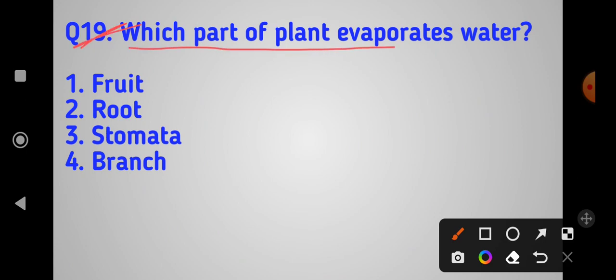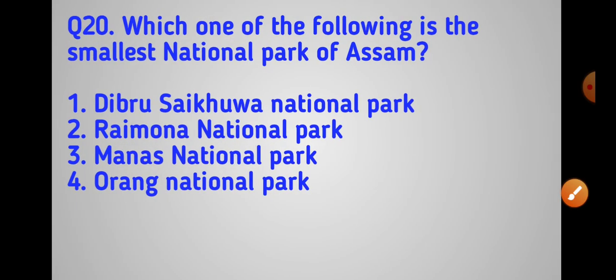Which part of plants evaporates water? The answer is leaves. Leaves are the part of the plant that evaporates water through stomata.